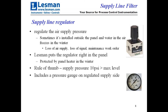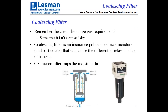We put a coalescing filter in here. In order to make this work, you need clean, dry purge gas going out that dip tube. Sometimes it isn't clean or dry. So the coalescing filter is like an insurance policy that drops the moisture out. It's got a 0.3 micron filter that not only takes the dirt out, but traps oil and water that drops out the bottom and sits in the bowl.